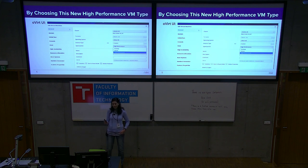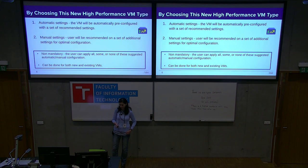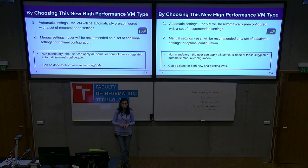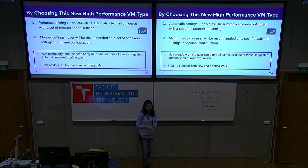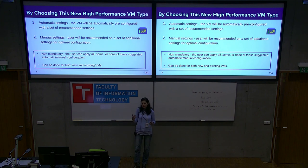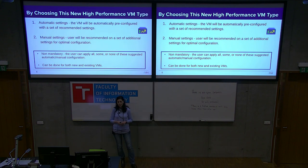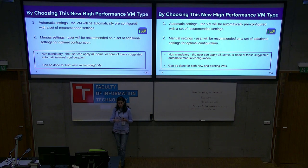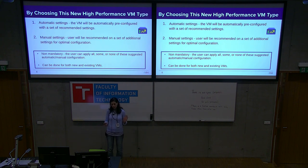It is easy, but there are still things to consider. By choosing this new high performance VM type, two things happen. First, automatic settings: the VM is pre-configured with a set of configuration settings that improve performance. But there are still a few settings we cannot automatically set in advance, because they depend on many things — for example, which host the VM will run on. For that reason, there is a second layer of manual settings, and we added a smart dialogue that helps the user set those. The user still needs to manually configure them, and we will detail those later.